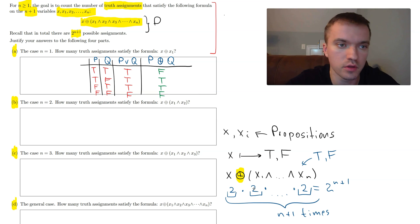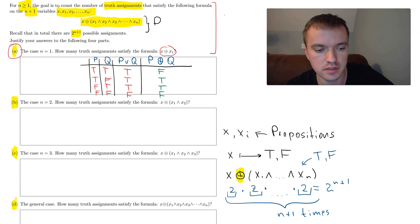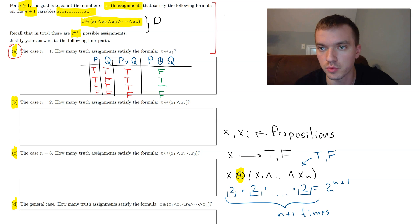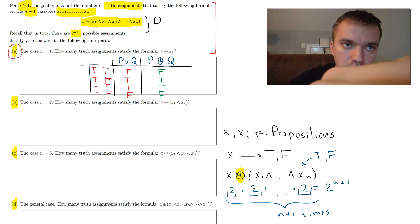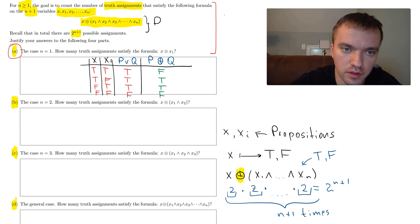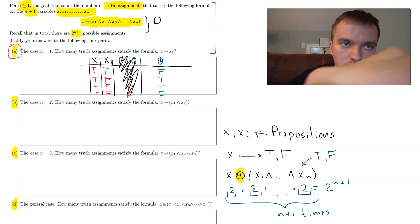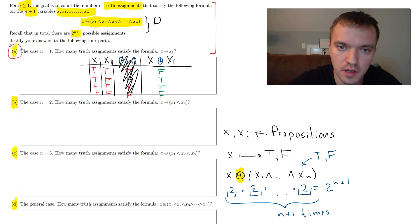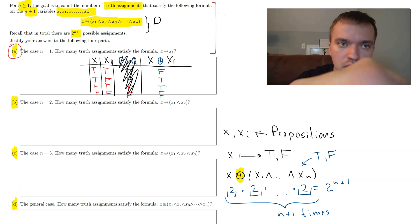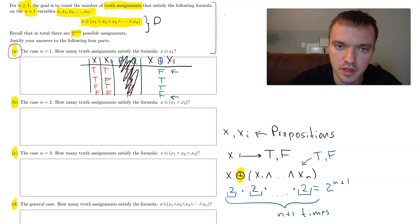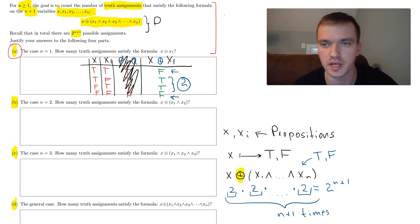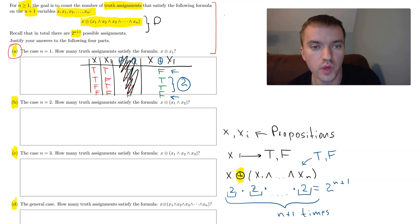For Part A, we consider the case when n = 1, which gives us the statement X XOR X1. We already solved this with the truth table above — just replace P with X and Q with X1. The result has two false assignments and two true assignments, so the answer is 2 truth assignments.